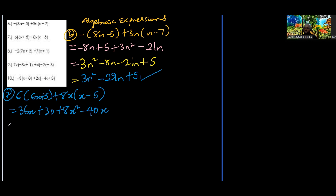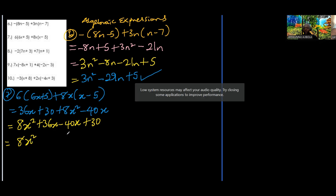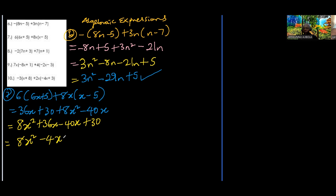Collecting like terms: 8x squared, then 36x minus 40x is negative 4x, plus 30. So the answer is 8x squared minus 4x plus 30.